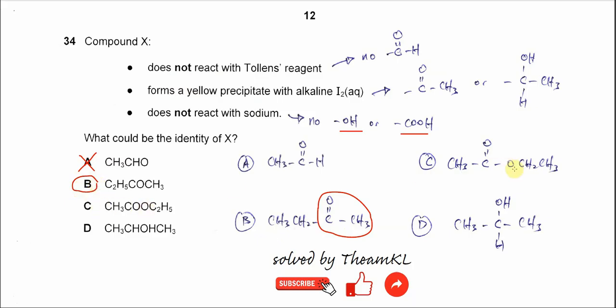C is an ester. Even though it looks like the methyl ketone that can react, because this methyl ketone, the carbonyl is in the ester group, right? So this one will not really react with the alkaline iodine solution to form the yellow precipitate, and of course it will not react with sodium. So this is not the answer.